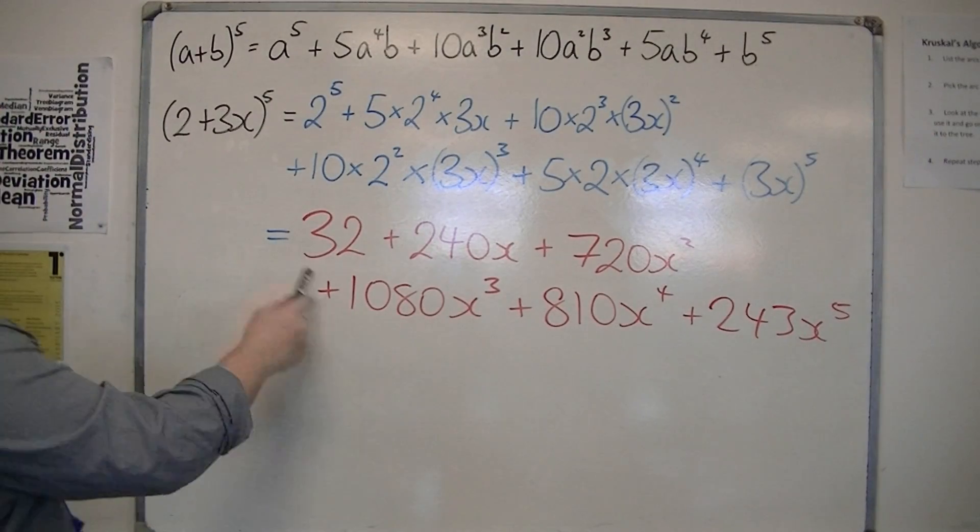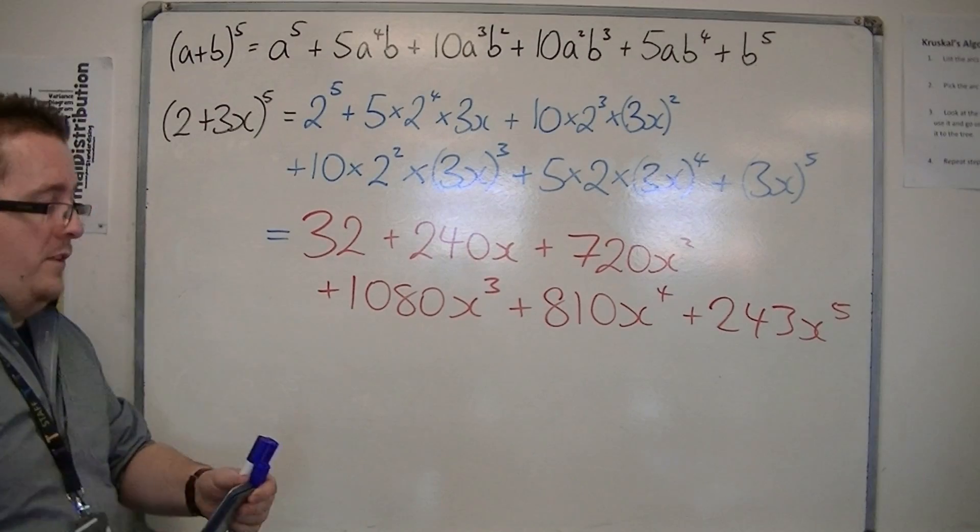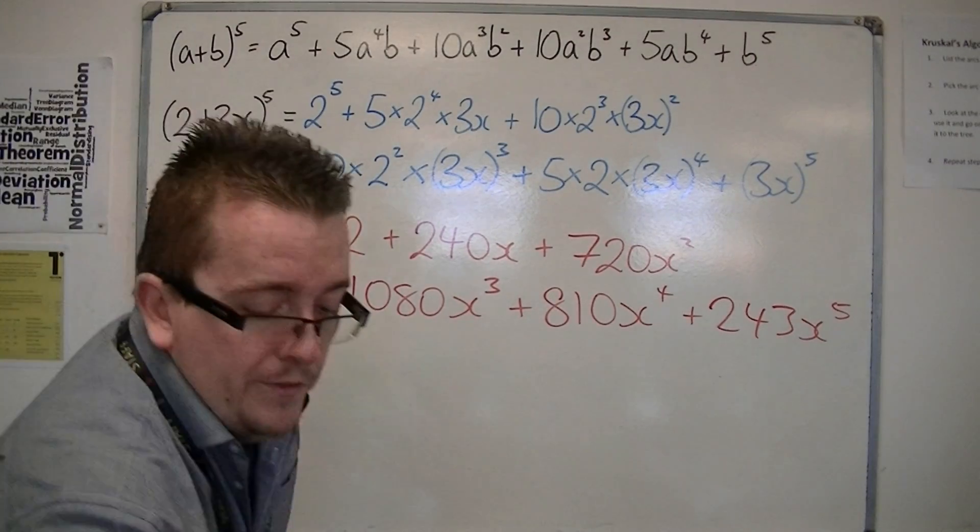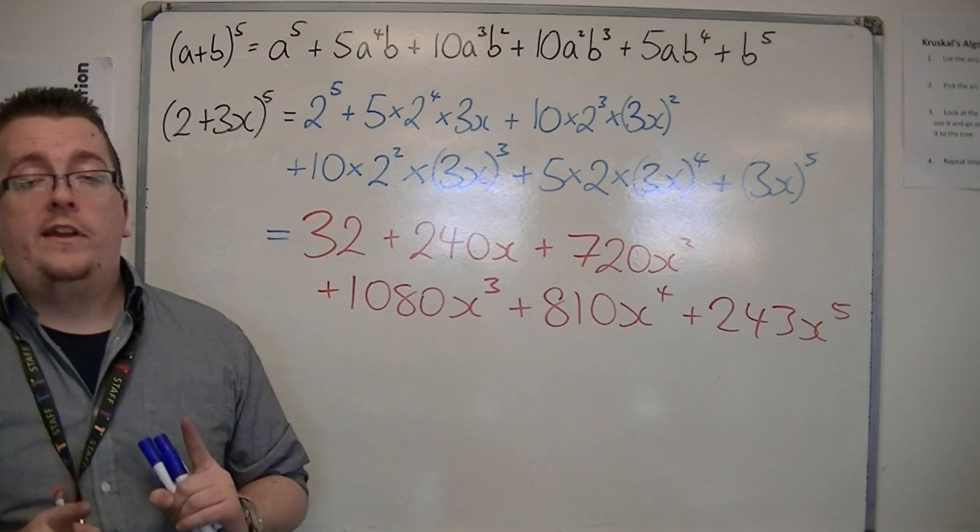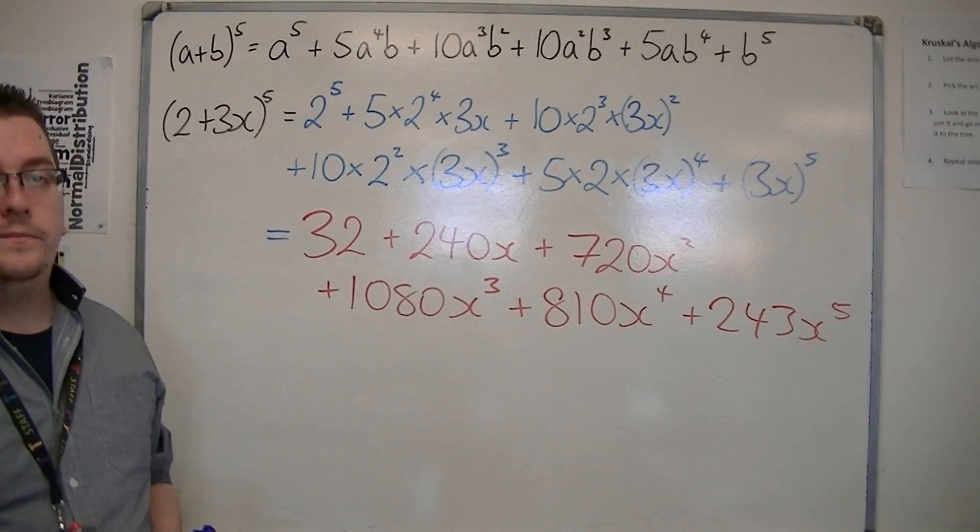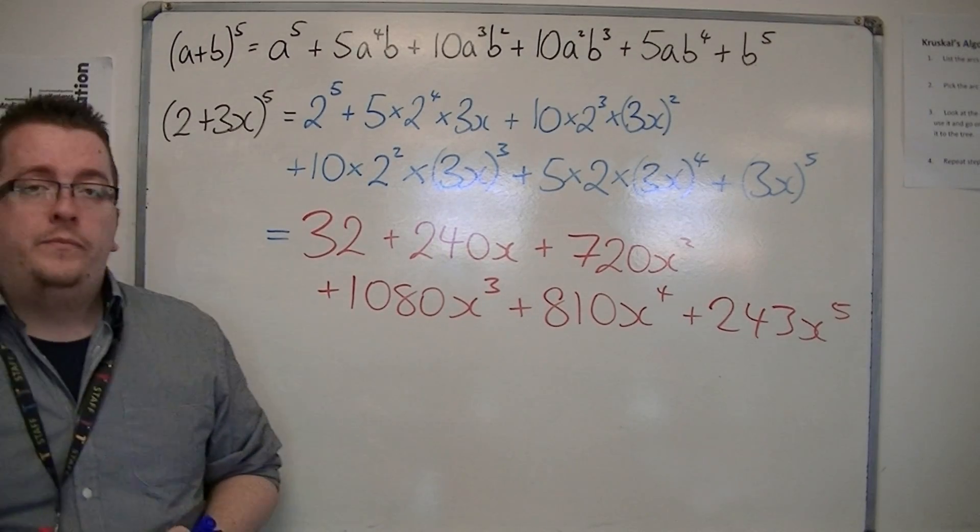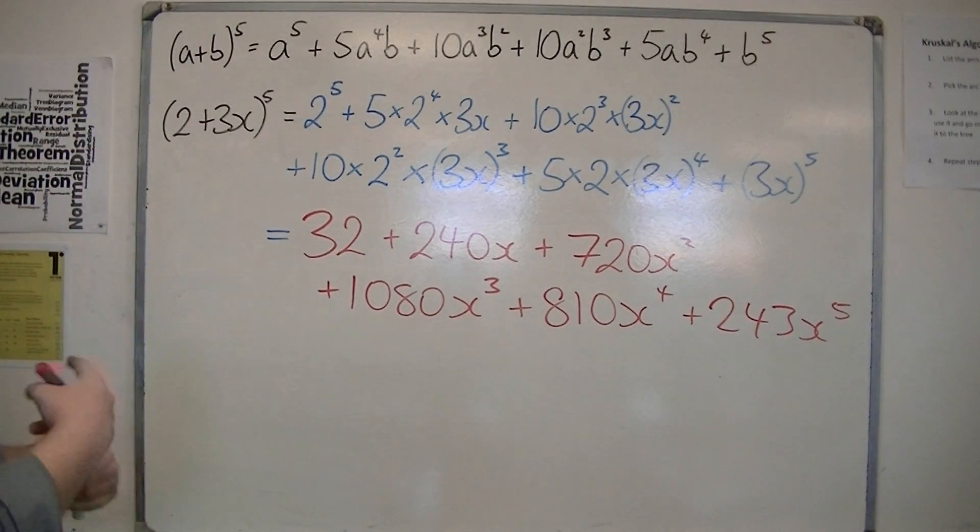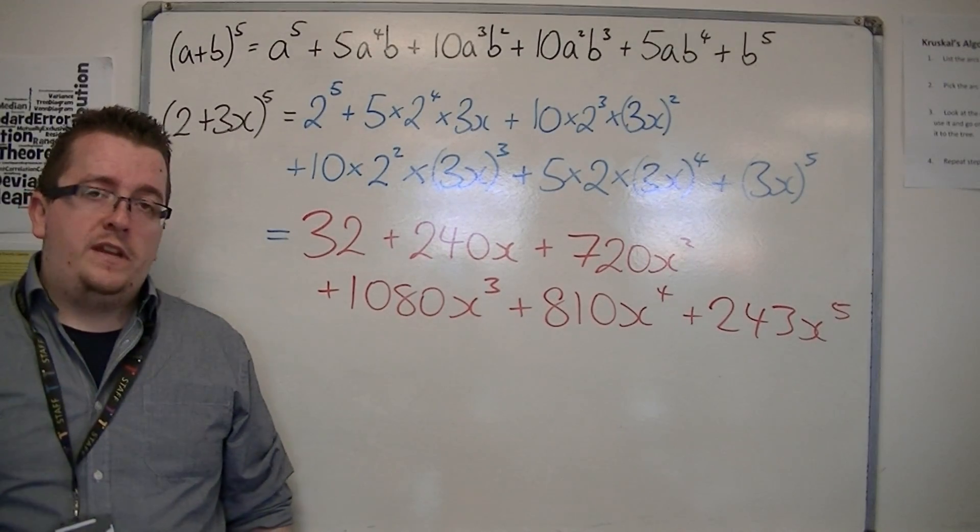And that is 2 plus 3x to the power of 5 expanded. And that is a lot quicker than just expanding 5 brackets, and you're less likely to make mistakes in doing it. So that is what binomial expansion is used for, and we'll be looking at more complicated problems in the next few videos.